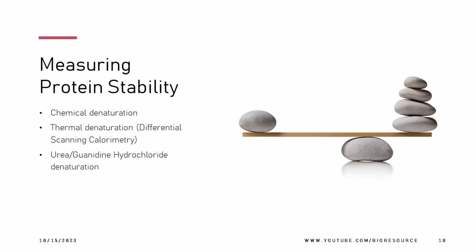Regarding protein stability: chemical denaturation is a technique that measures stability by exposing the protein to a chemical denaturant such as urea or hydrochloric acid, which disrupts non-covalent interactions and causes the protein to unfold. The concentration of denaturant required to unfold the protein is a measure of its stability. Thermal denaturation measures stability by heating the protein and measuring the temperature at which it unfolds.